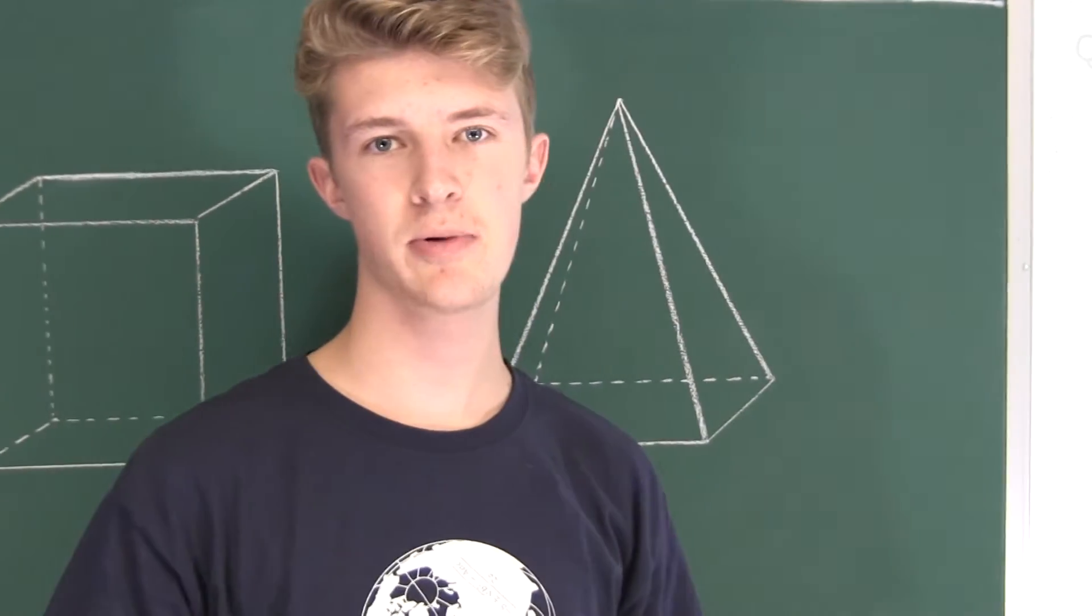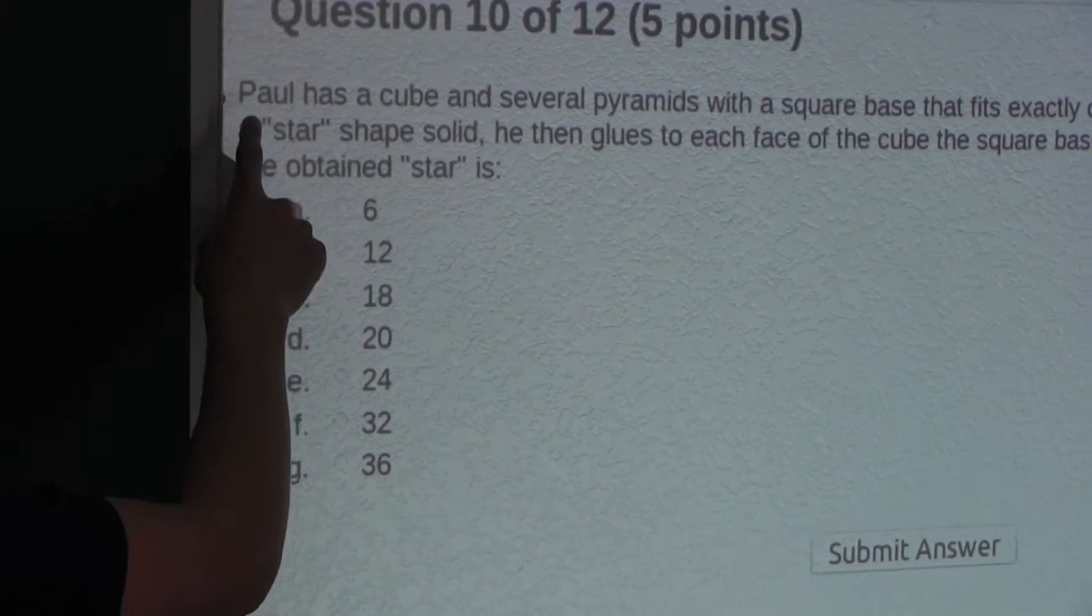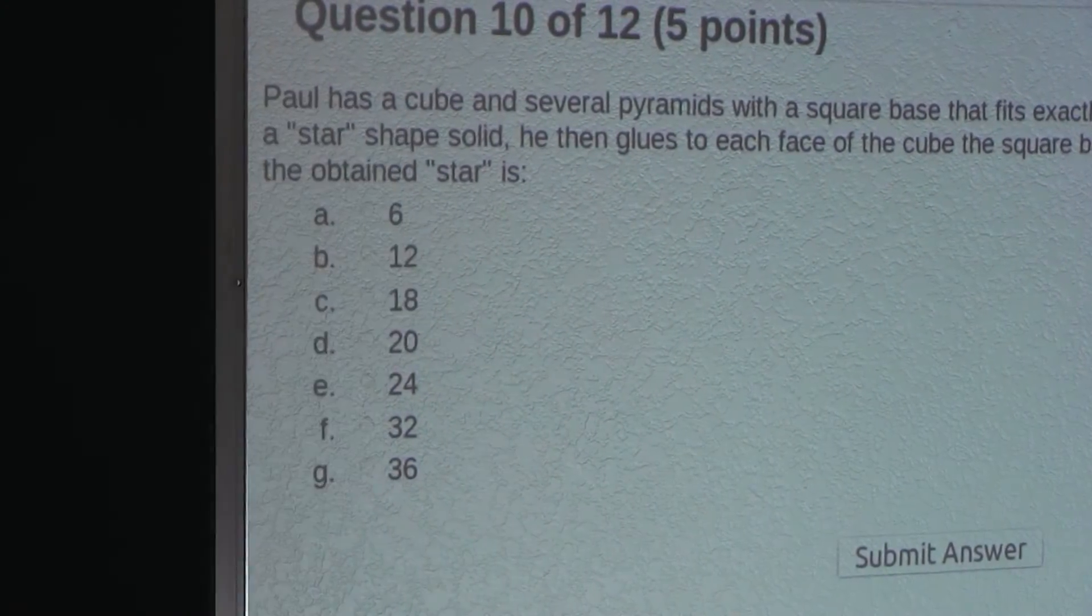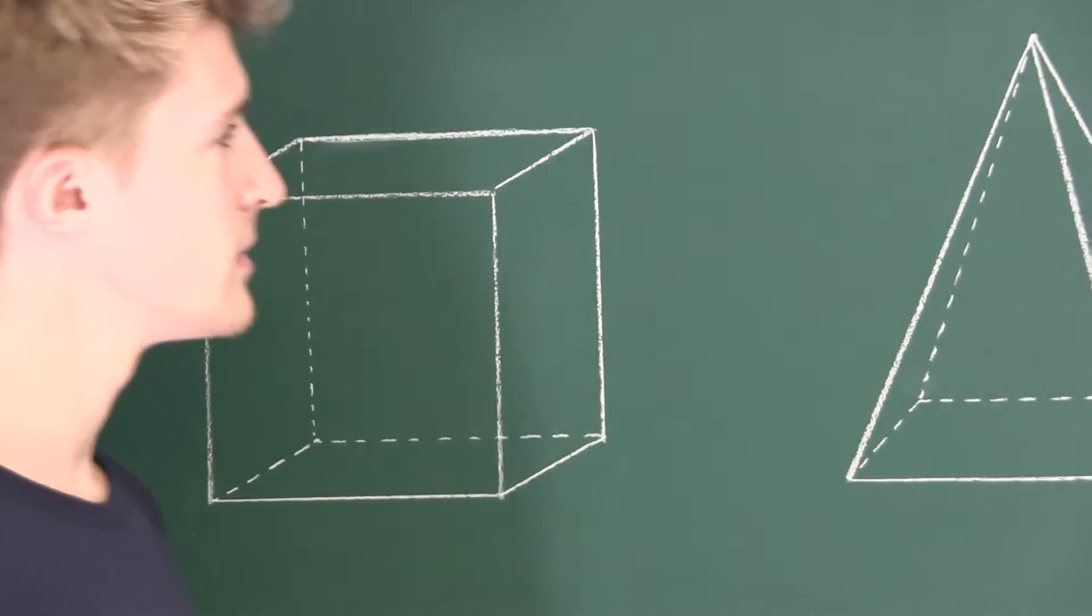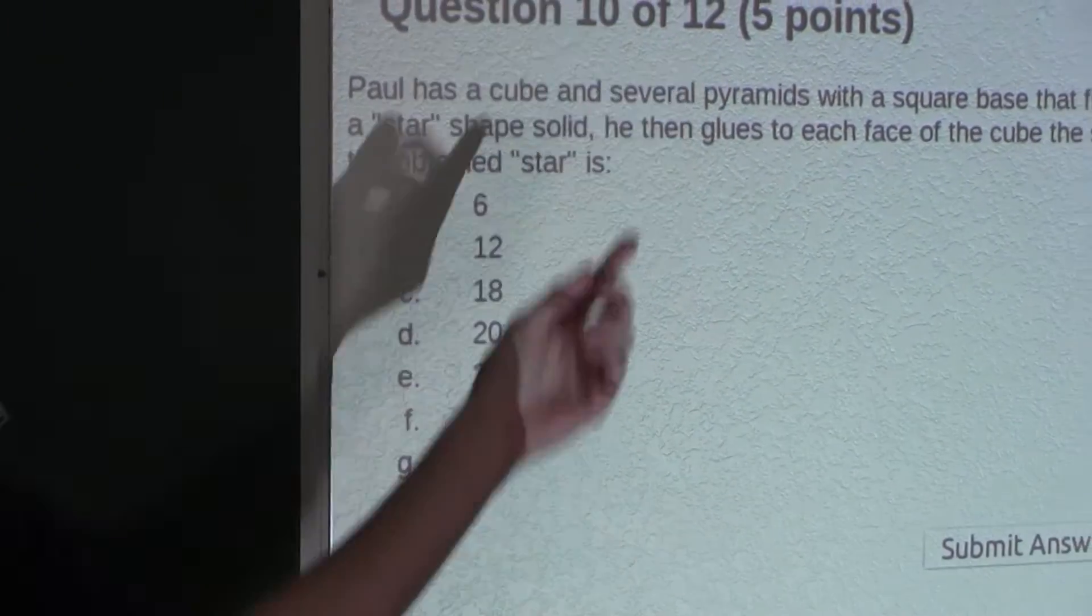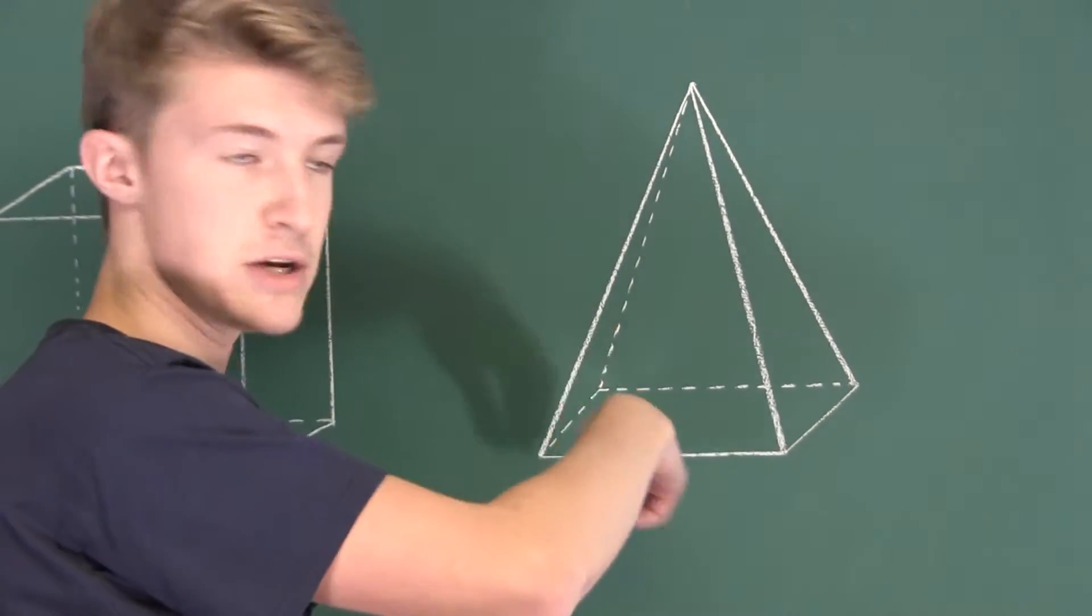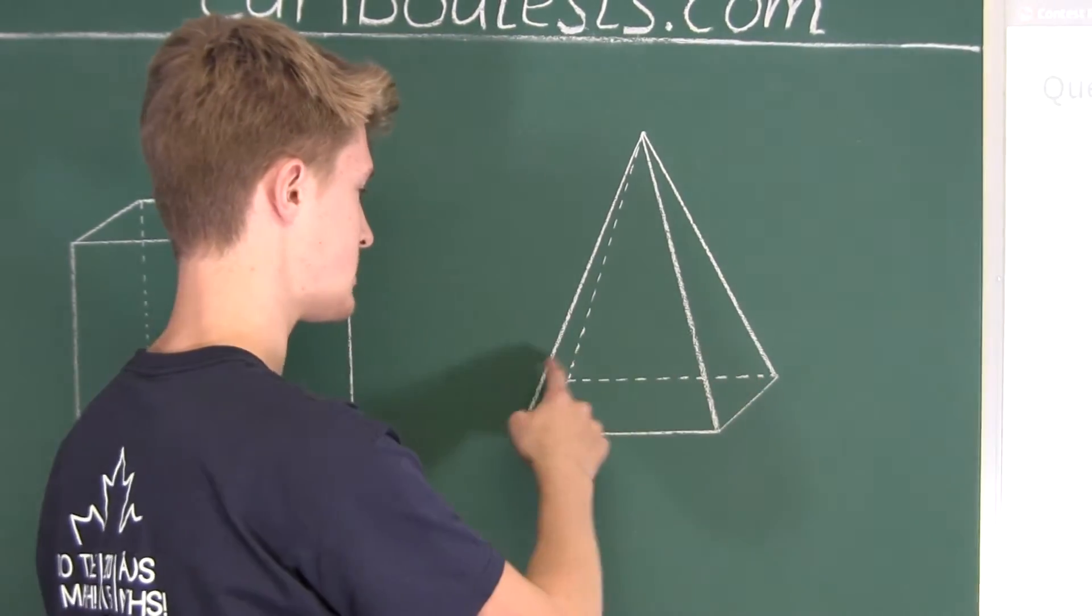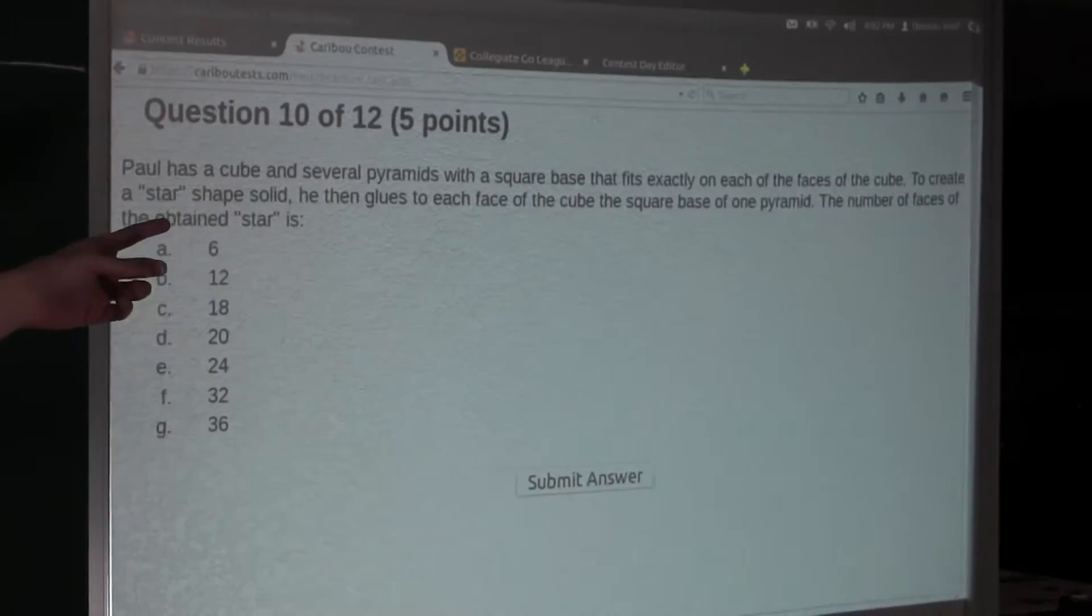Now let's reread part of the question. Let's look at the first sentence again. It says, first, Paul has a cube. So what we have drawn here is a cube. Then it says, and several pyramids with a square base. So here, what we have drawn is one pyramid with a square base at the bottom. And we also see it says,